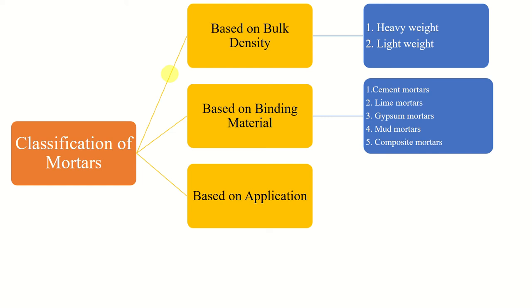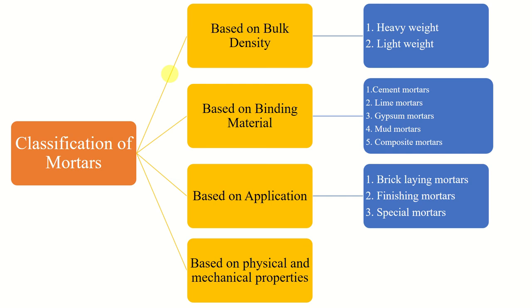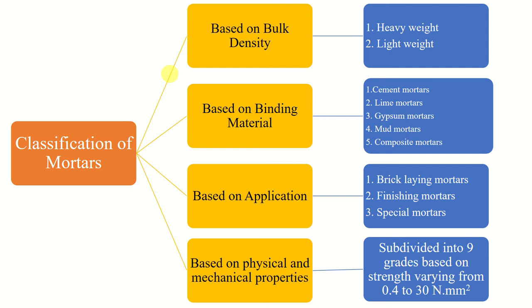The third classification is based on applications, such as bricklaying mortars, finishing mortars, or special mortars. The last classification is based on physical and mechanical properties — specifically strength — divided into 9 grades starting from 0.4 to 30 N/mm², and each mortar is called by its grade name.